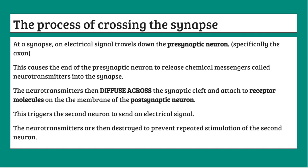This electrical signal causes the end of the presynaptic neuron to release chemical messengers called neurotransmitters into the synaptic cleft. The electrical signal basically stimulates the end of the presynaptic neuron to release the neurotransmitters into the synapse. Next, the neurotransmitters diffuse across the synaptic cleft.